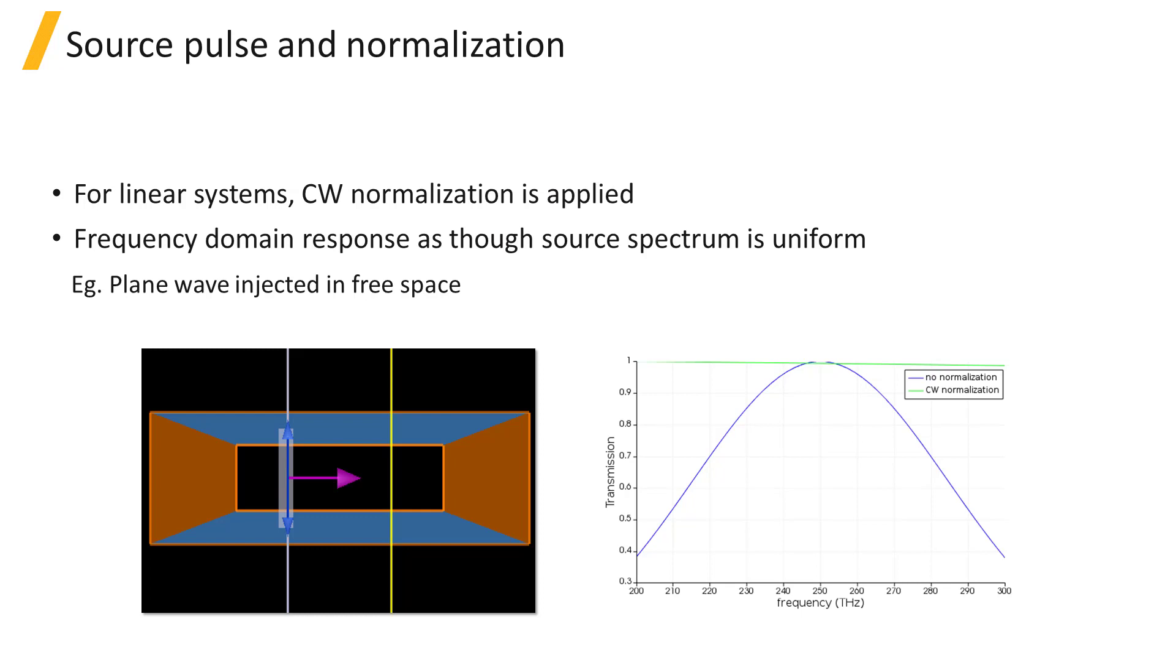With no normalization applied, the transmission spectrum from the monitor shown by the blue line in the plot shows the shape of the spectrum of the source pulse. With CW normalization applied, the transmission spectrum shown by the green line in the plot is 1 over the frequency range. As you can see, the spectrum is uniform when CW normalization is applied.